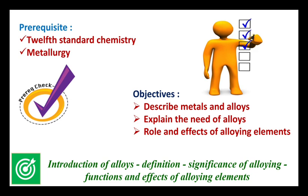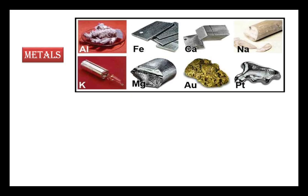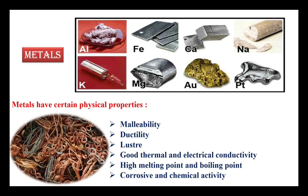We start with metals. Instead of learning alloys first, we need to know about what metals are. A metal is a hard material which can be extracted from naturally occurring ores. For example, aluminium is extracted from its ore bauxite, and iron is extracted from its ore hematite. These metals have certain physical properties: malleability, ductility, luster, thermal and electrical conductivity, high melting and boiling points, and corrosion and chemical activity.